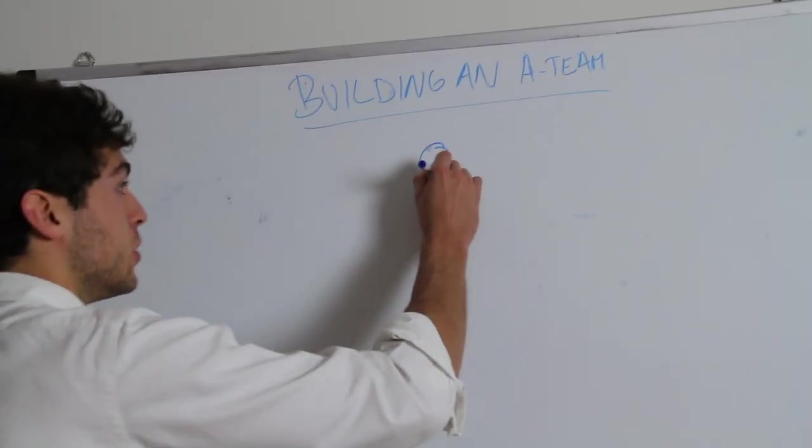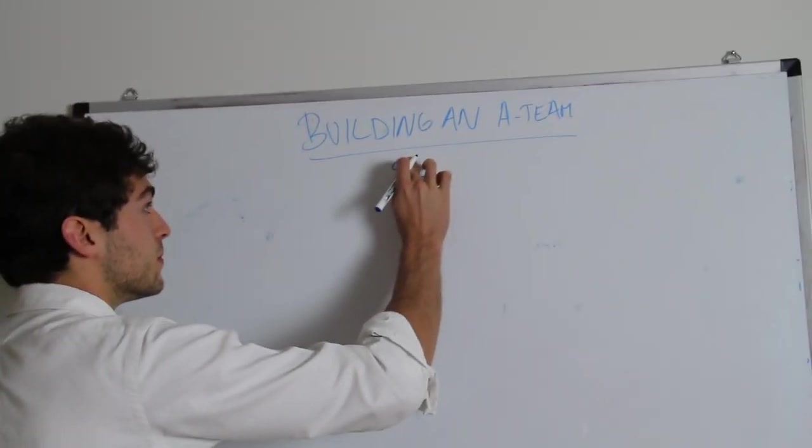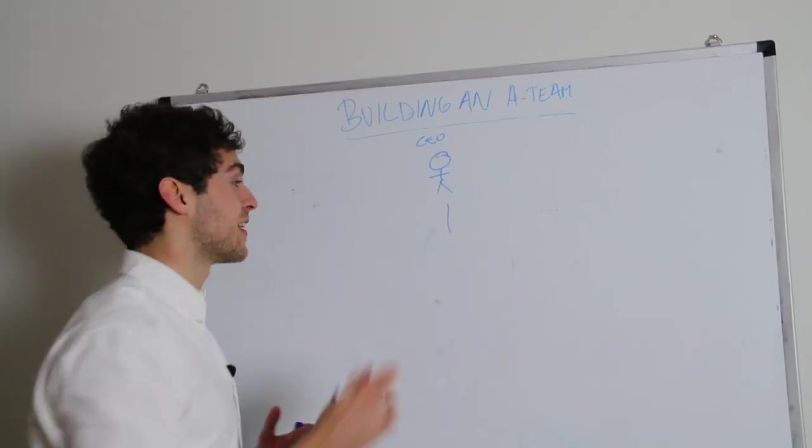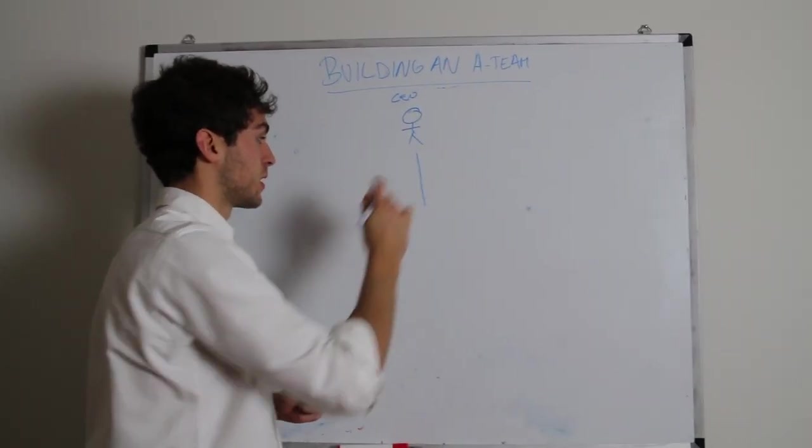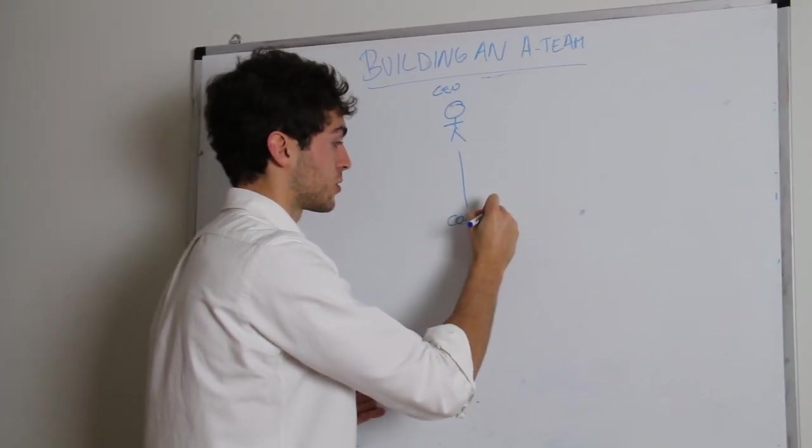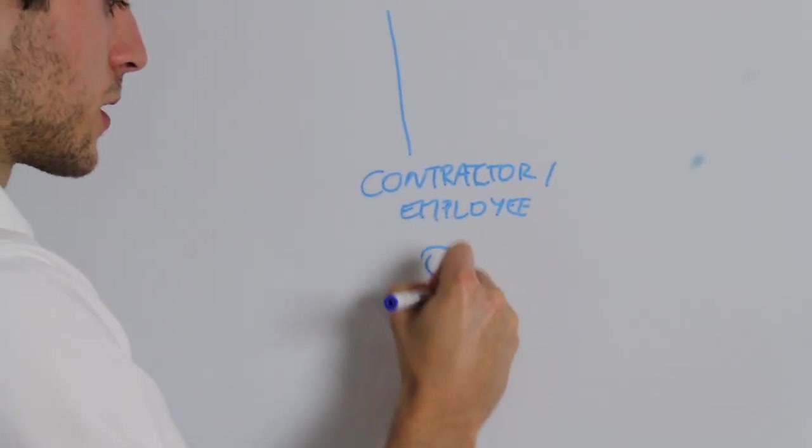This really is the ideal structure that you want to have when you're building an agency. First of all, we've got you. So you're the CEO. You're the CEO founder. You're going to see that it's very simple. And right below you, a straight line of communication is going to be the contractor slash employee. Let's draw this guy right here.